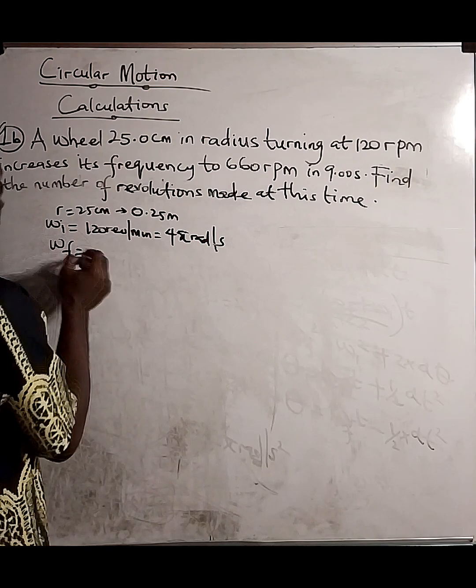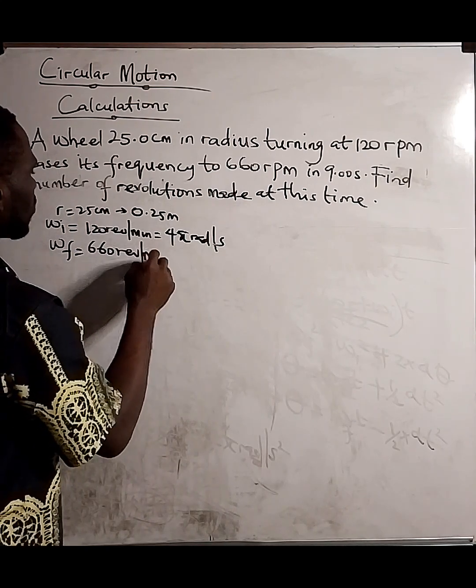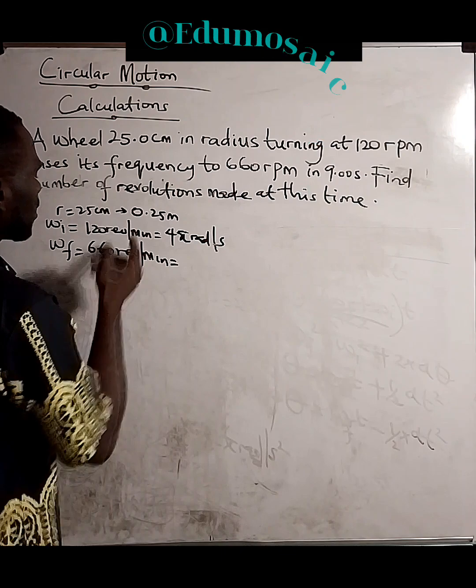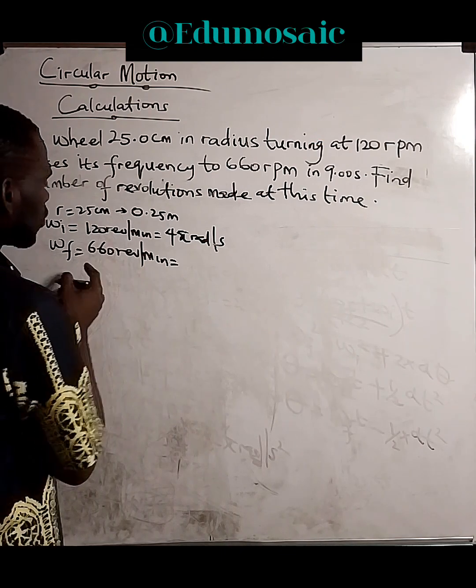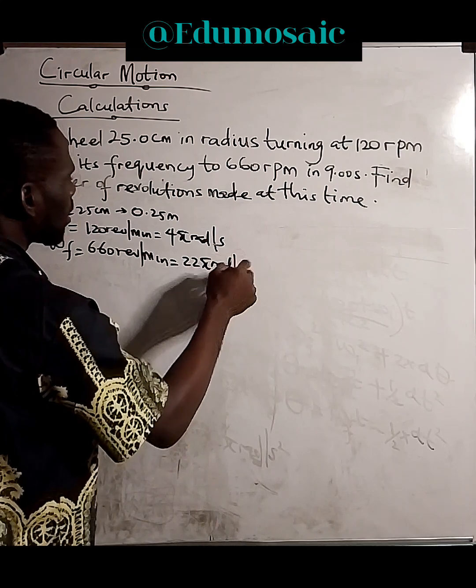Then the final angular speed, which is 660 rpm. When we do the same thing, times it by 2 pi divided by 60, we end up having 22 pi rad per second.